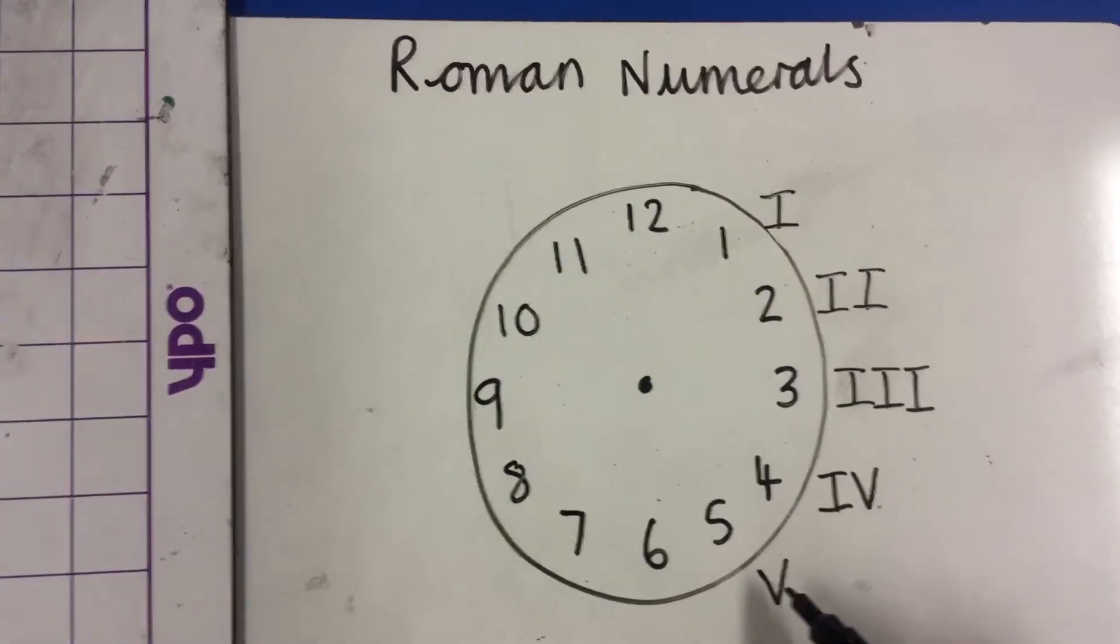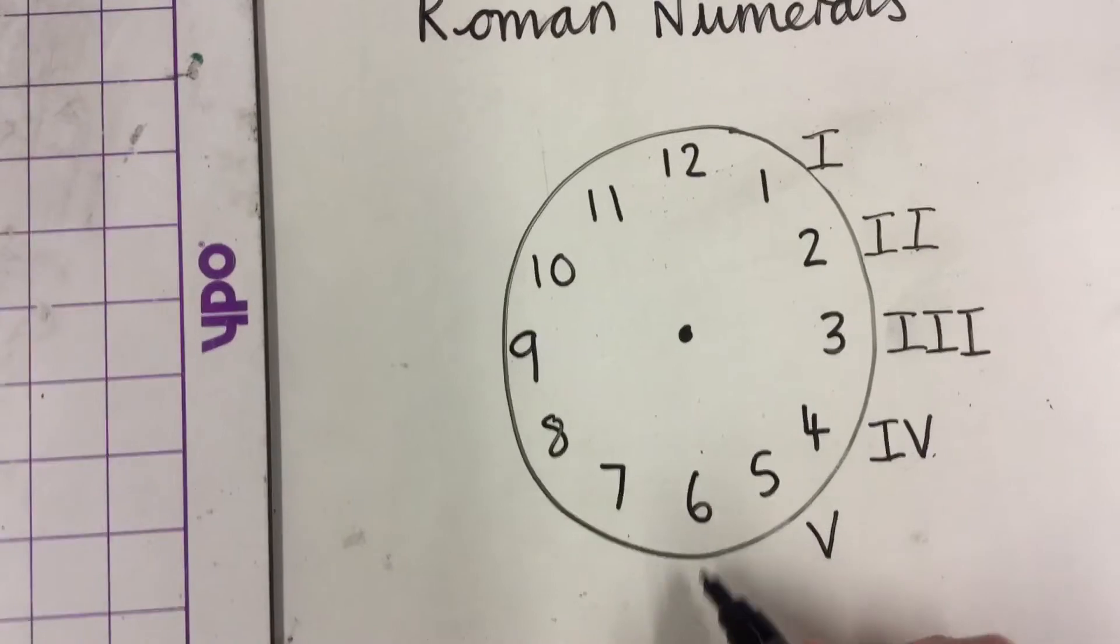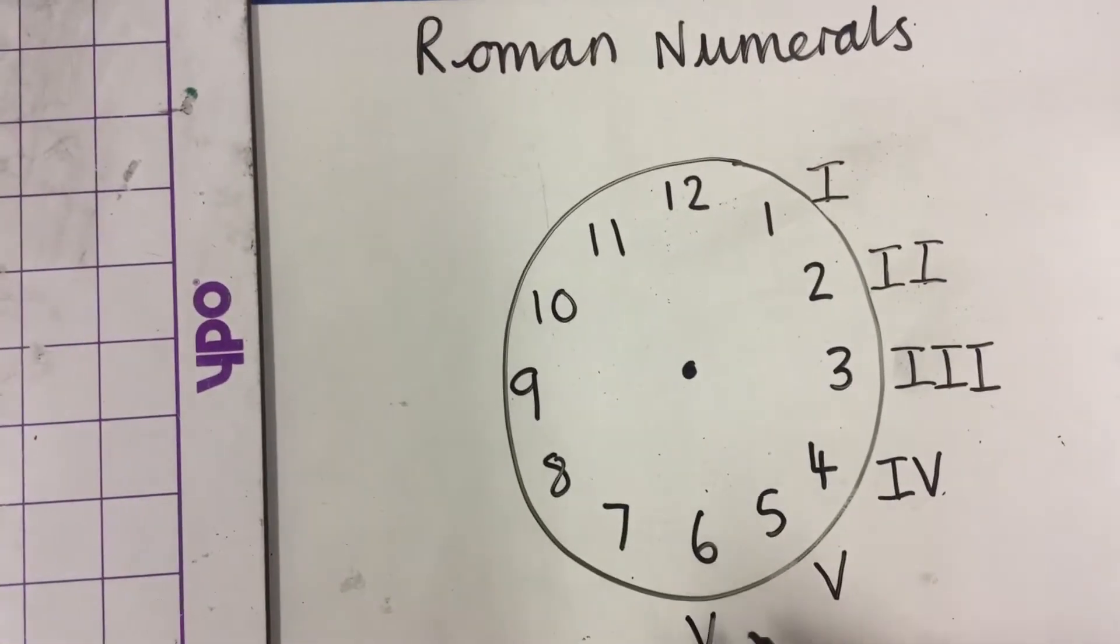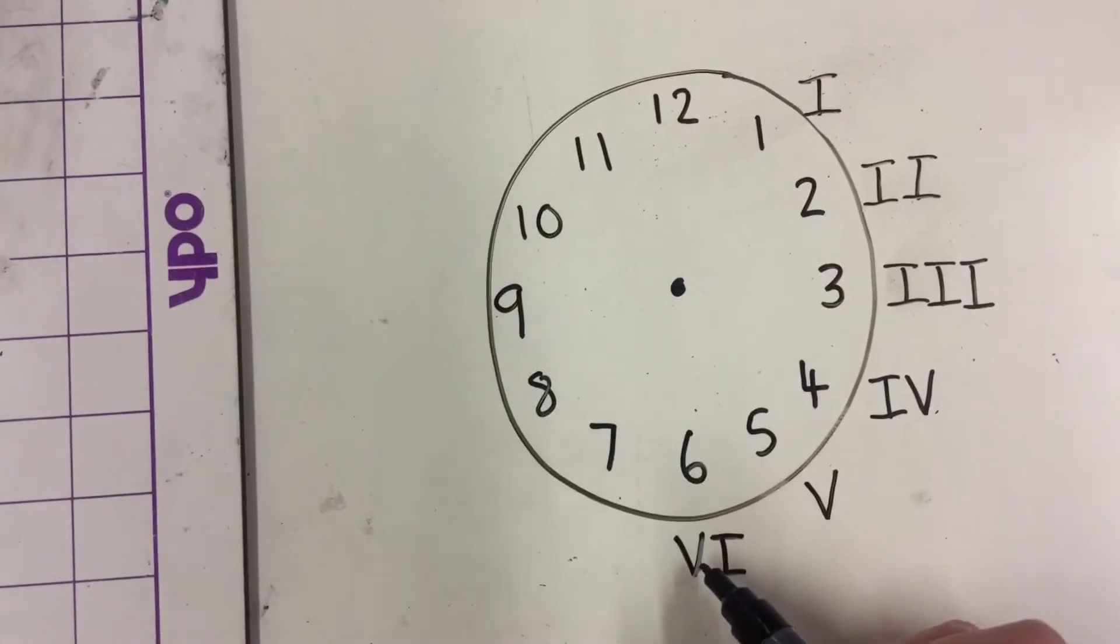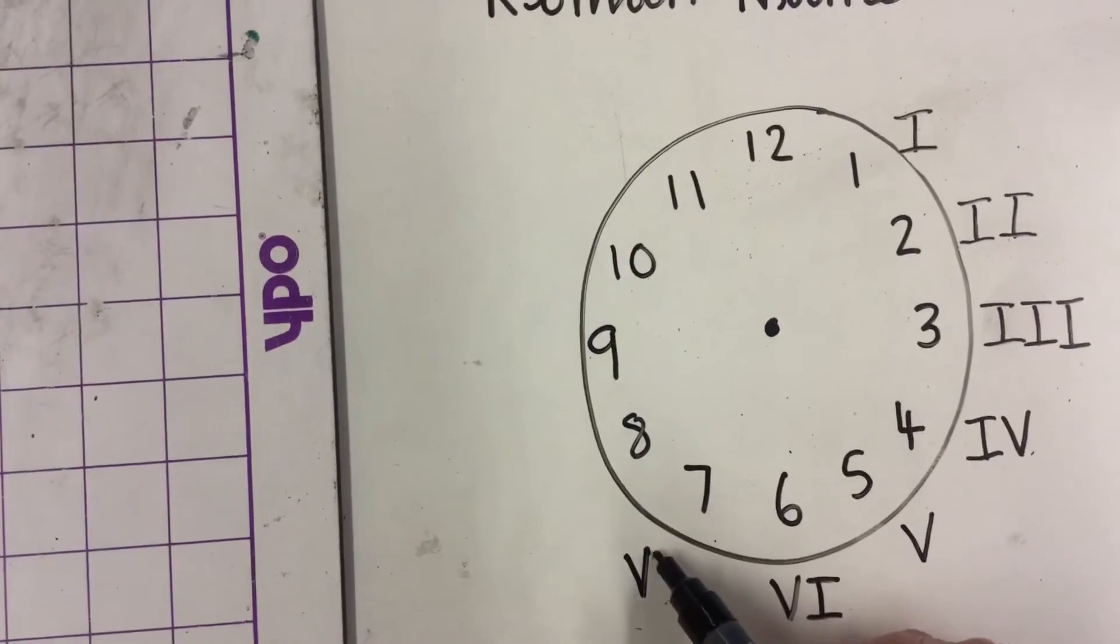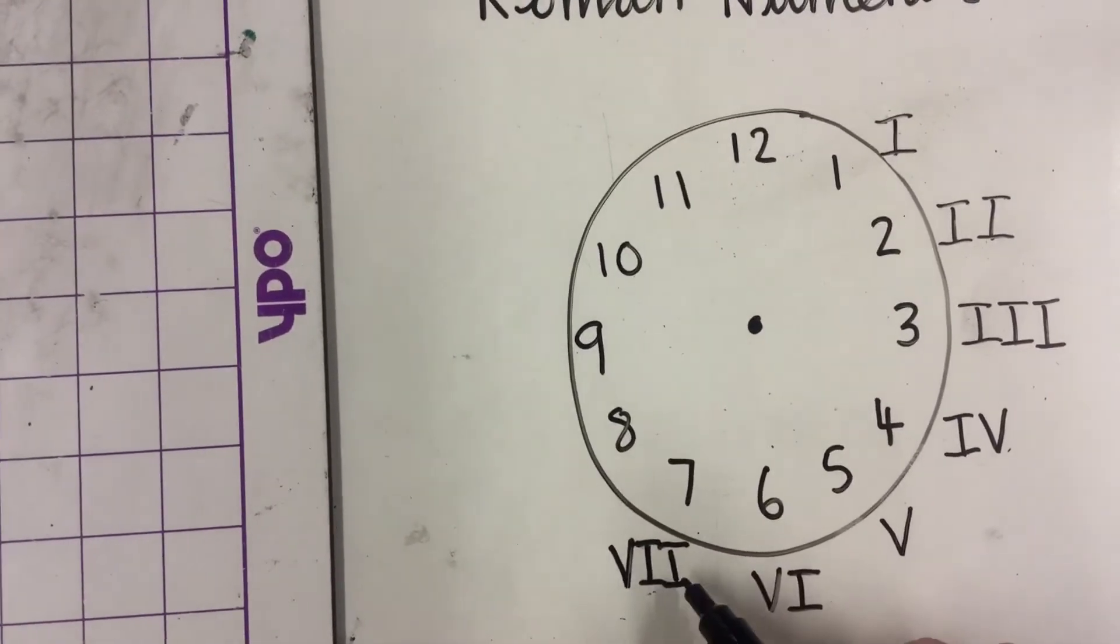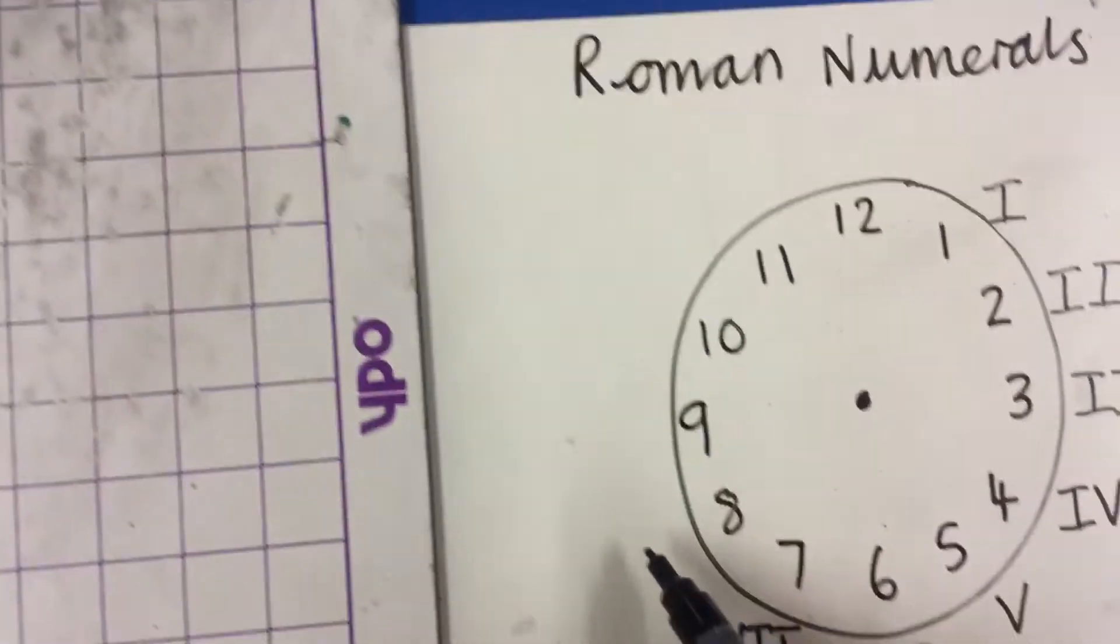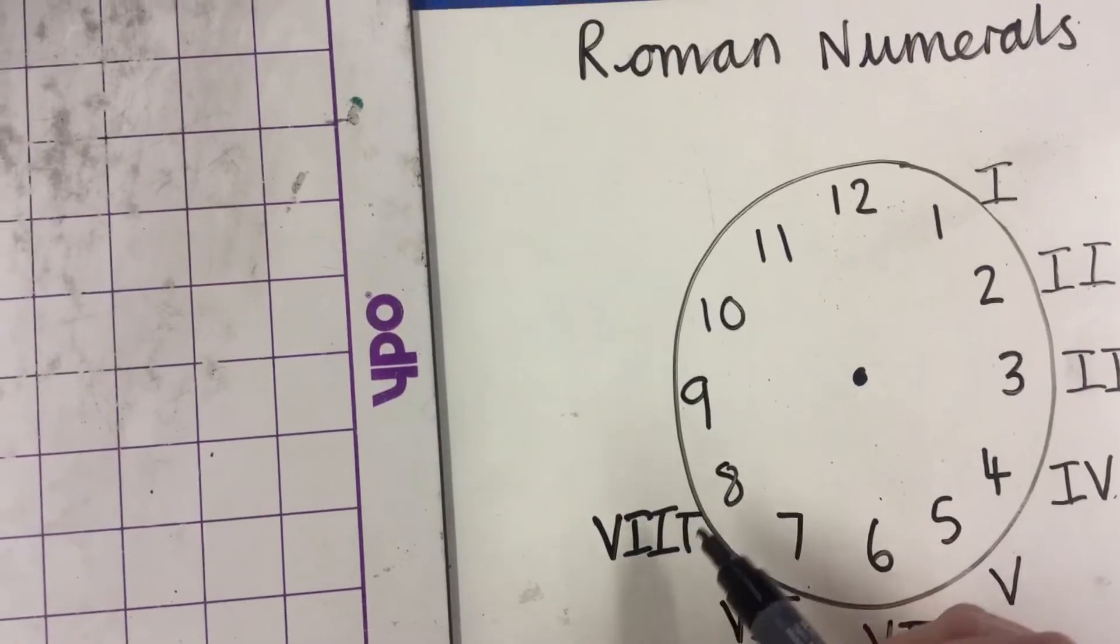Then we have that V as the letter 5. The number 6 is done in a slightly different way. So we have V, and then we have an I after the V to represent it's 1 more than 5. 7 follows this similar pattern: 1, 2, so that's 5, 6, 7. 8 follows this again: 5, 6, 7, 8.